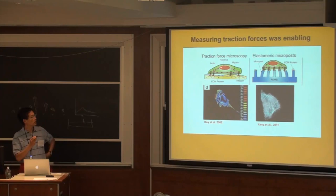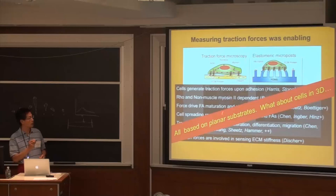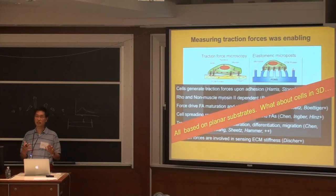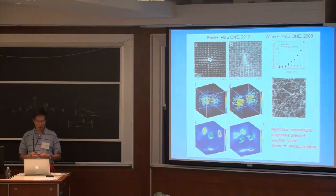All of these tools to measure traction forces — whether acrylamide gels or microposts — are really enabling the field to now start to link mechanical forces to cell function. But one big question is that all of this was based on planar substrates. In morphogenesis, cells aren't always on a surface; sometimes they're embedded within a material and pulling. Changing the dimensionality and boundary conditions may change the mechanics. So we'd really like to measure forces when cells are within a 3D environment.